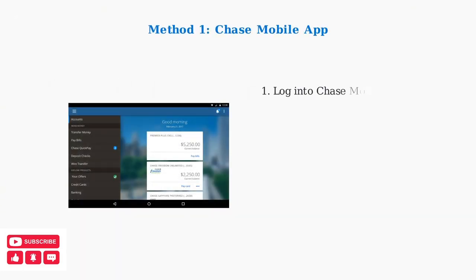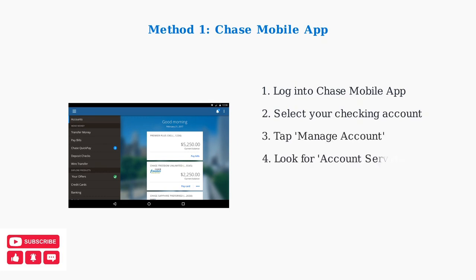The first method uses the Chase mobile app. After logging in, select your checking account from the main screen. You'll see your account balances and various menu options on the left side. Next, tap on Manage Account or look for Account Services in the menu. This will open additional account management options.